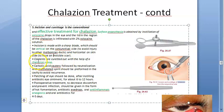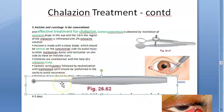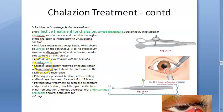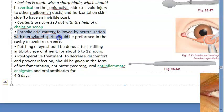After incising, the contents are scooped out using a chalazion scoop — a cup-shaped instrument used to scoop out the contents like ice cream. After that, phenol (carbolic acid) cautery is performed and neutralized with methylated spirit to avoid recurrence. Antibiotic is instilled and the eye is patched for 6 to 12 hours.